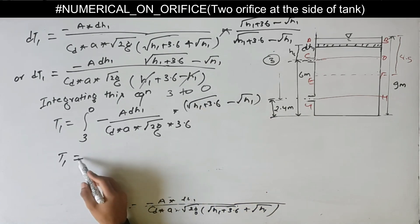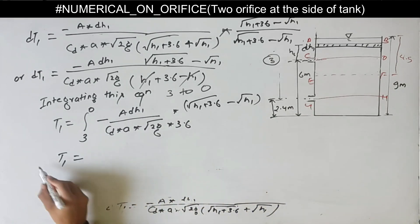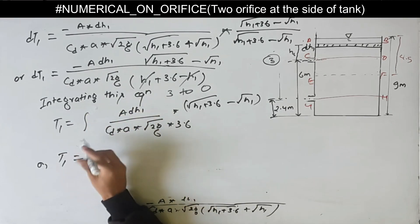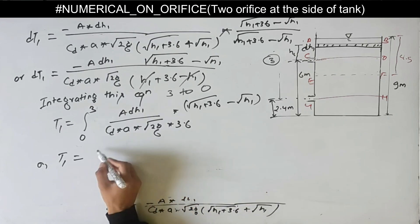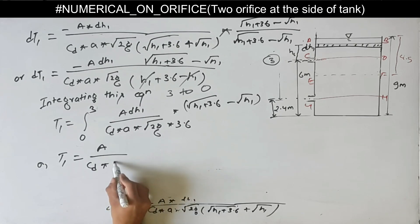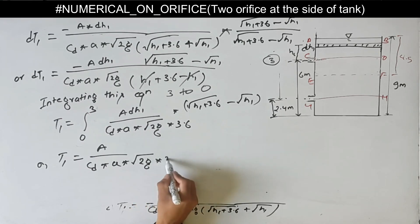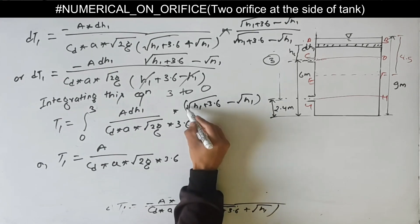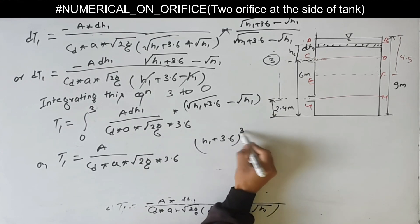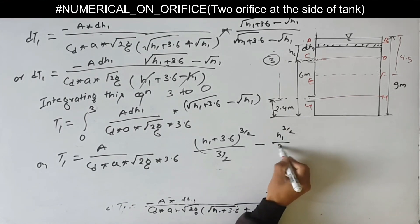This total time T1 to fall level of water from AB to CD. Removing the negative sign, we change our limits to 0 to 3. Area of cross section of tank, coefficient of discharge, area of orifice, root(2g), and 3.6 are all constants. So we integrate only root(H1 + 3.6) minus root(H1). Integrating, this gives (H1 + 3.6)^(3/2) divided by (3/2) minus H1^(3/2) divided by (3/2), with limits from 0 to 3.